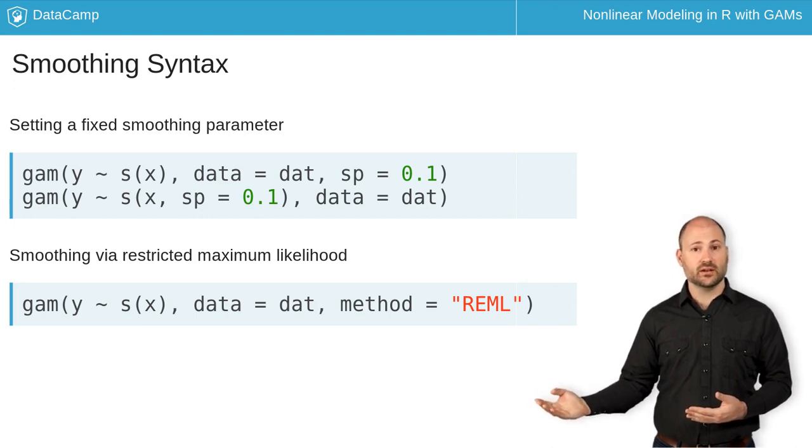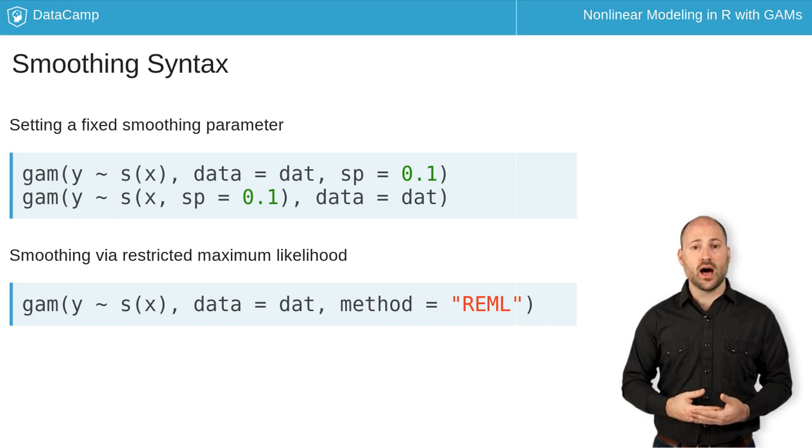Instead, if we allow R to do this work for us, the MGCV package offers different methods for selecting smoothing parameters. I, and most GAM experts, strongly recommend that you fit models with REML, or Restricted Maximum Likelihood method. While different methods have their advantages, REML is most likely to give you stable, reliable results.